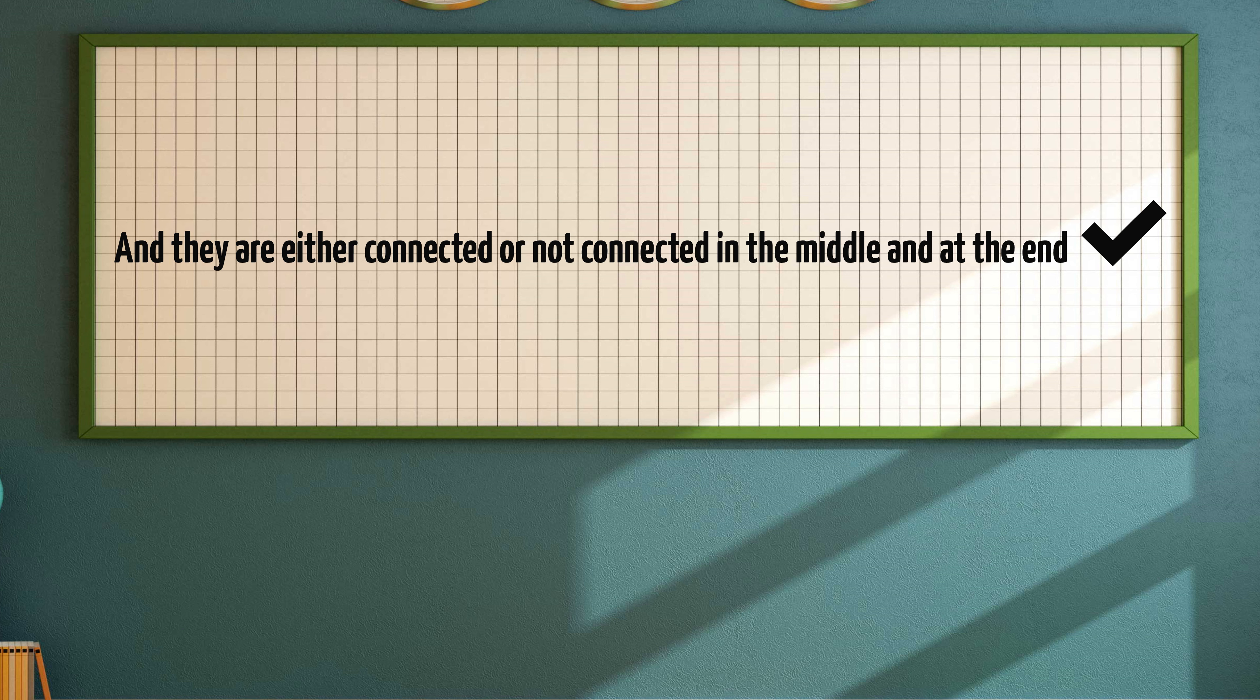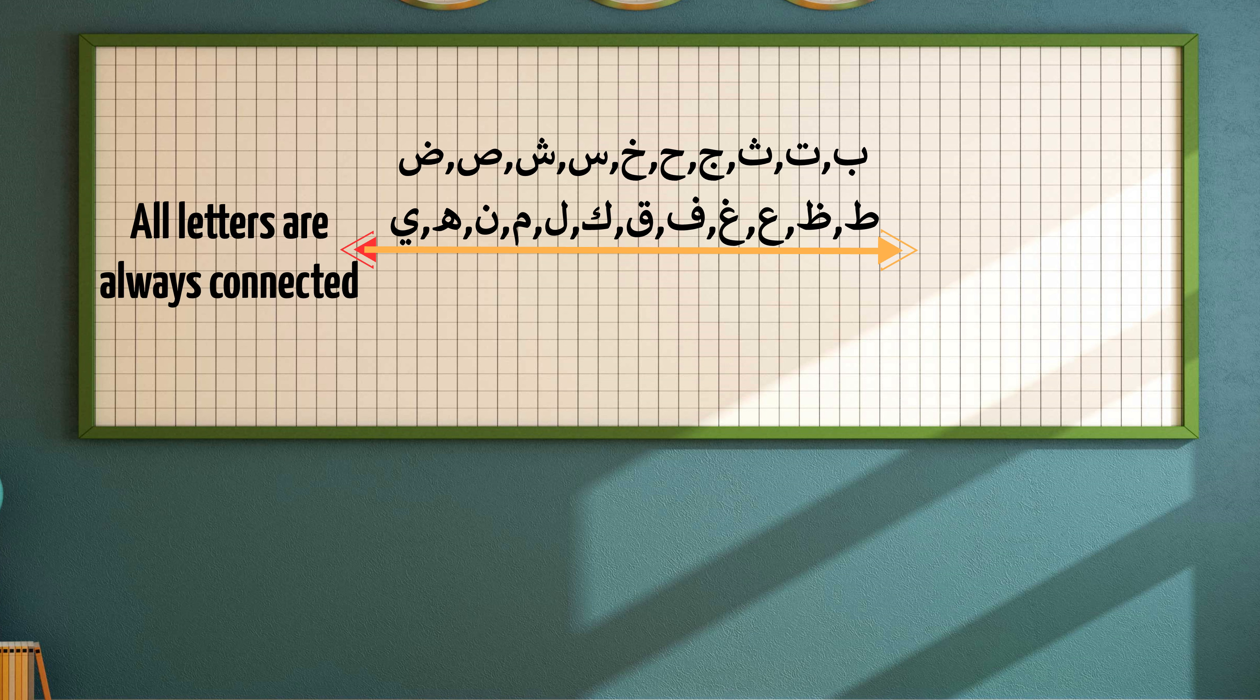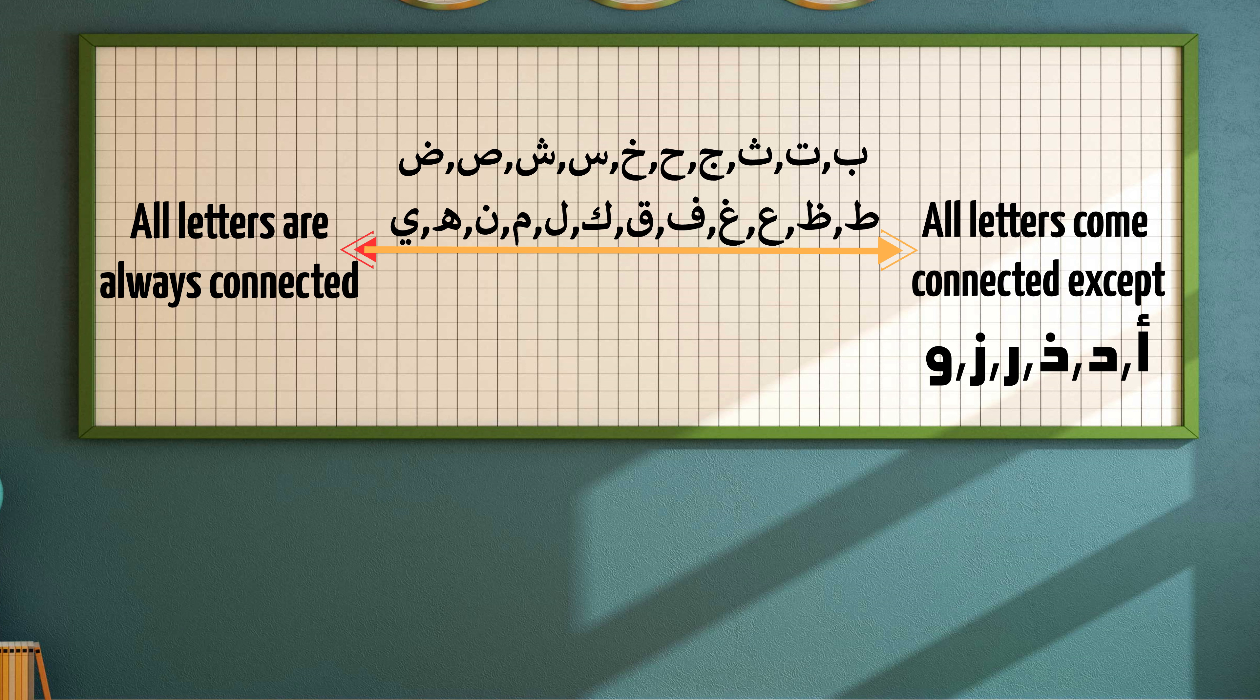Now let's see which letters can be connected to these letters that we just mentioned and which not. When they come connected, all letters are always connected to them if they come after them. However, if they come before them, then all letters can be connected to them except six letters. And those letters are Alif, Dal, Thal, Ra, Zain, and Waw.